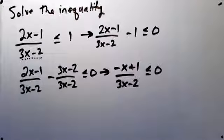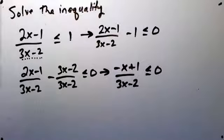So now I have this rational expression and I want to know everywhere that it's less than or equal to zero. Well, we're going to use the sign chart idea again.